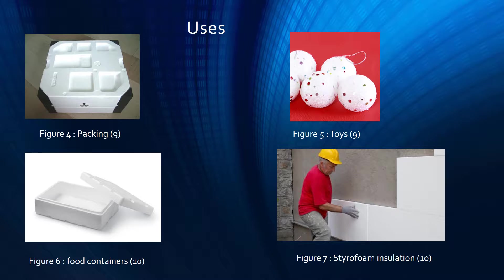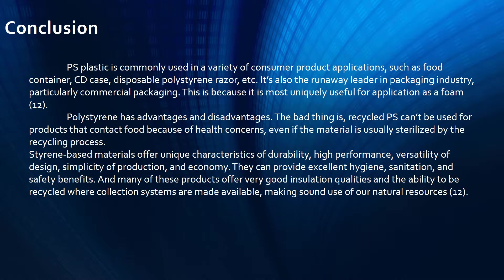Polystyrene can be used in packaging, insulation, food containers, electric casings, toys, and piping. In the next figure you can see packaging, toys, food containers, styrofoam, and insulation — all made out of styrofoam, which is polystyrene.